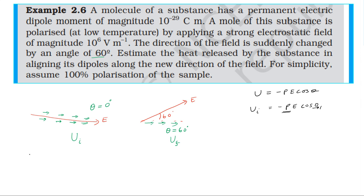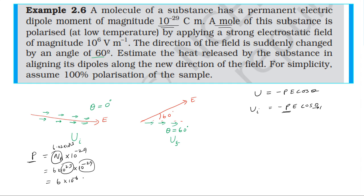For 1 mole of substance, using Avogadro's number approximately 6 into 10 power 23, the total dipole moment contribution gives 10 power minus 29 multiplied by 6 into 10 power 23, which equals 10 power minus 6. The initial potential energy is minus 10 power minus 6 multiplied by 10 power 6, giving initial energy equals minus 6 joules.